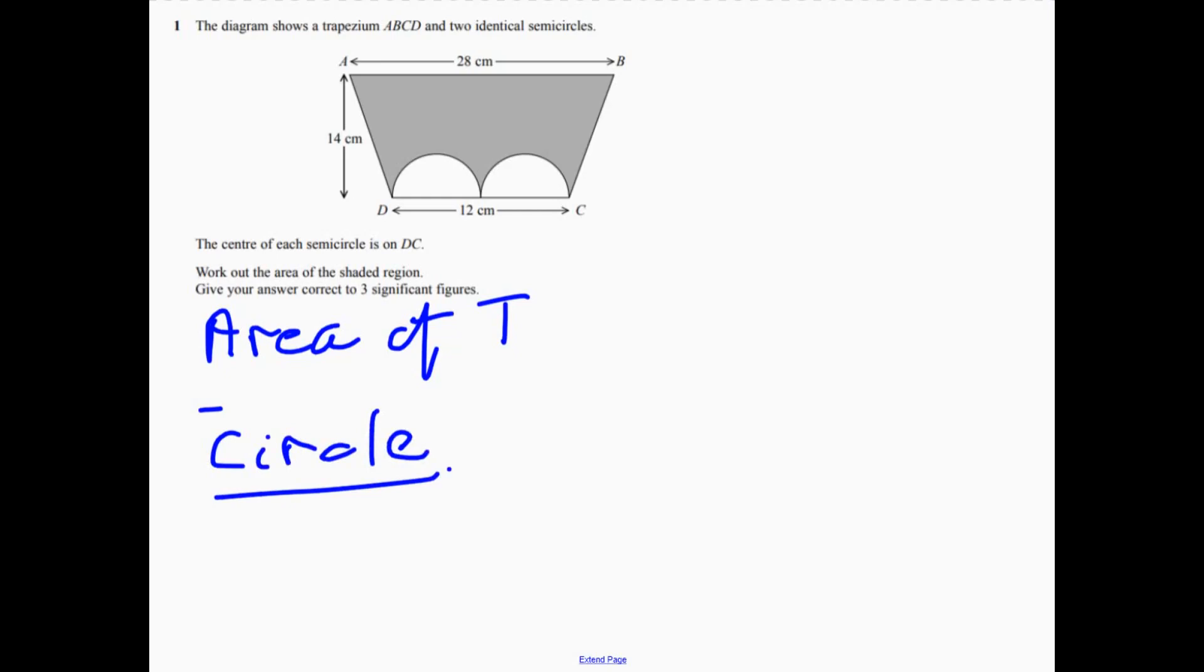Area of a trapezium. It's the top, add the bottom, divide by 2 and then multiply by a height. If you do that it's 280. That's 280 centimeters squared.